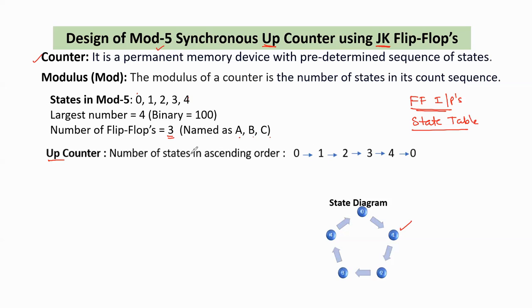An up-counter means the number of states should be taken in ascending order. That means 0 goes to 1, after 1 it goes to 2, after 2 it goes to 3, 3 goes to 4, and after 4 it goes back to 0. Again the sequence repeats: 0 goes to 1, next to 2, and so on. This is the up-counter sequence, and this sequence represented graphically is called the state diagram.